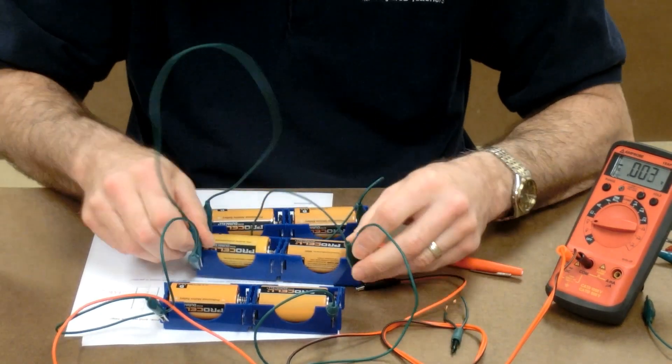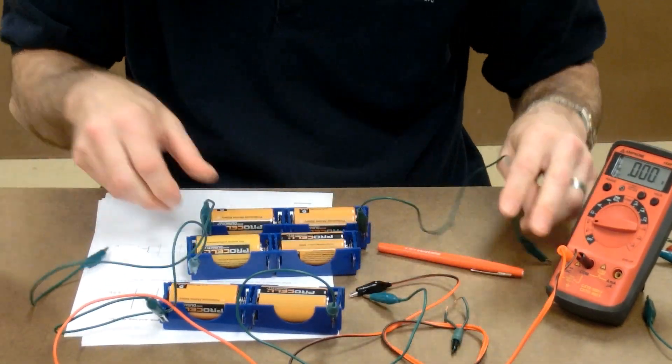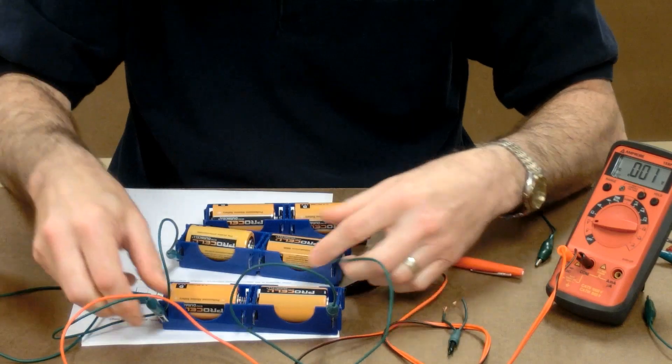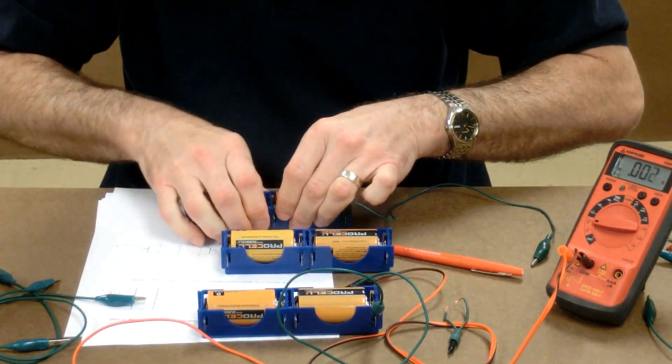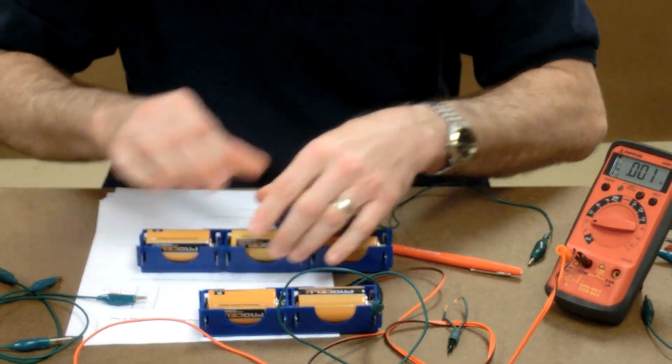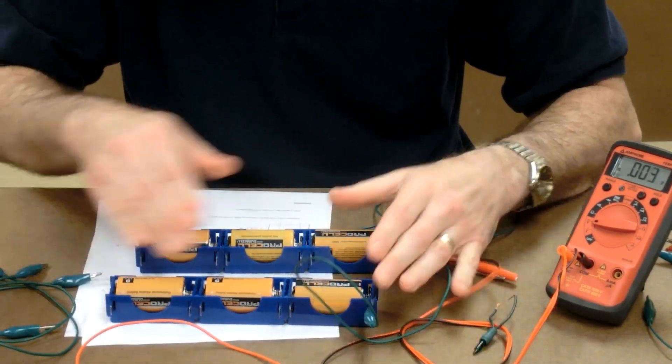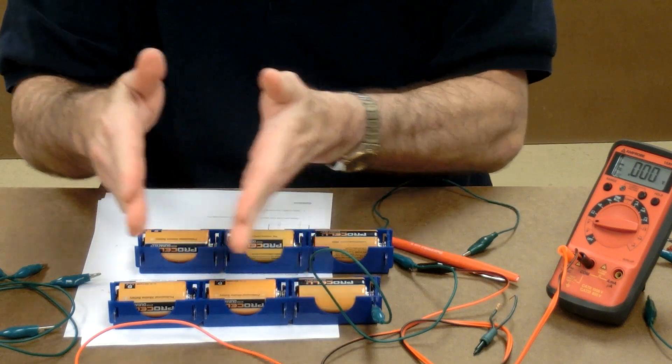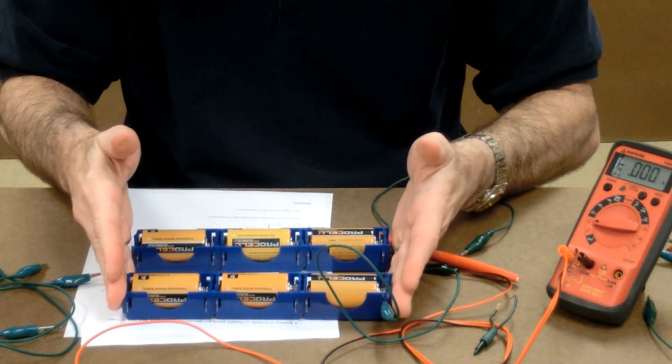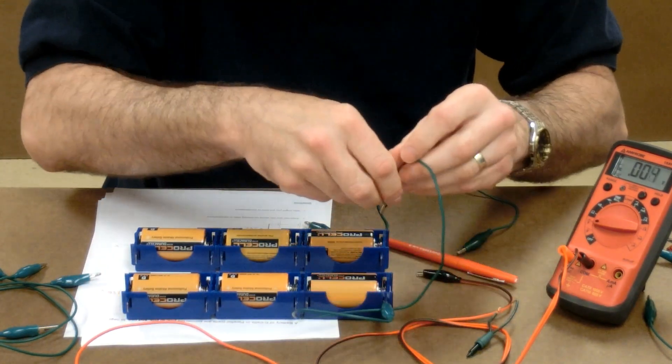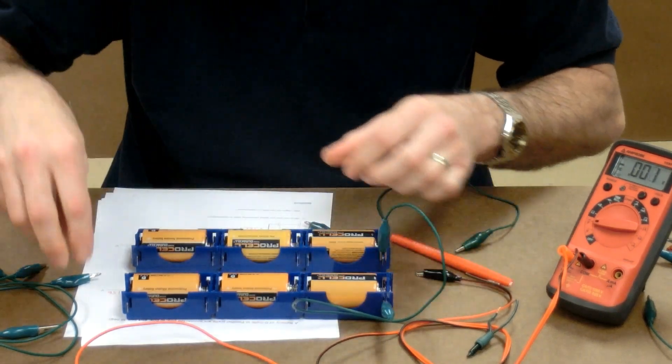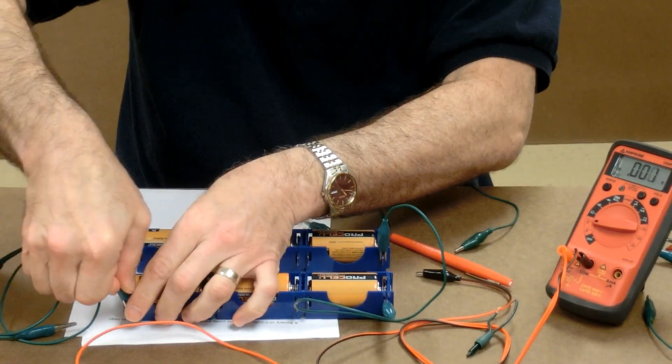What if we have, instead of two parallel branches of two, what if we have two parallel branches of three cells? Now, three cells in series, 1.6, 1.6, 1.6 would give us 4.8 volts.